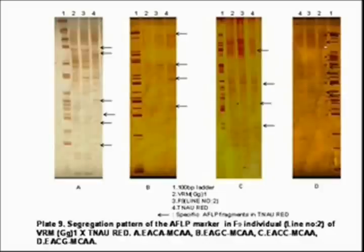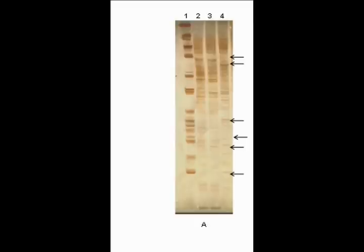This is the AFLP gel photo. Lane 1 represents the 100 base pair ladder. Lanes 2 and 4 are the parents, VRM and TNAU Red. Lane 3 represents the F9 population. Using AFLP, we are determining which parent the F9 population resembles. The arrow mark represents a band present in TNAU Red (lane 4) but absent in the F9 population (lane 3). The F9 population resembles VRM (lane 2) since the bands match each other.